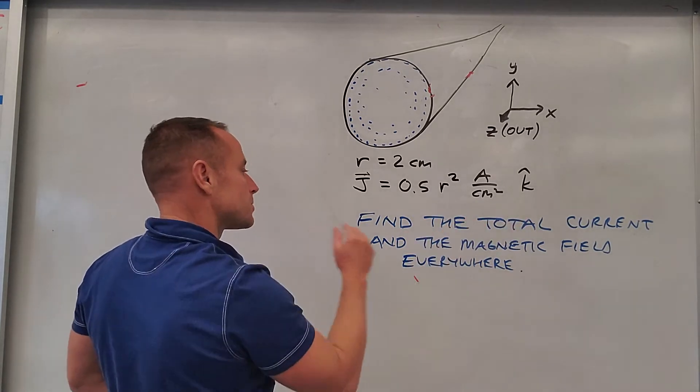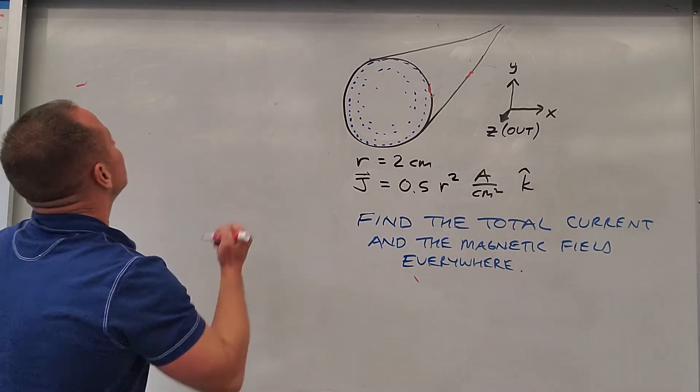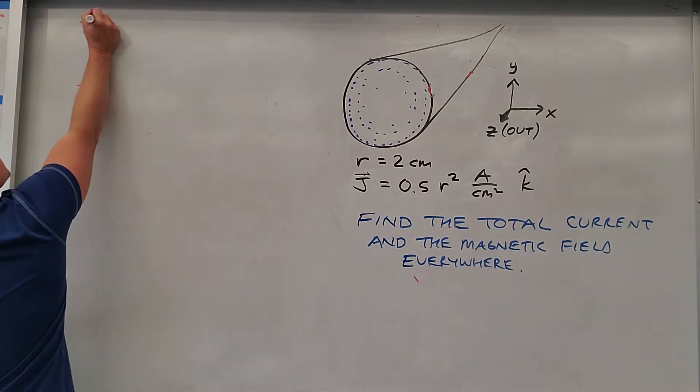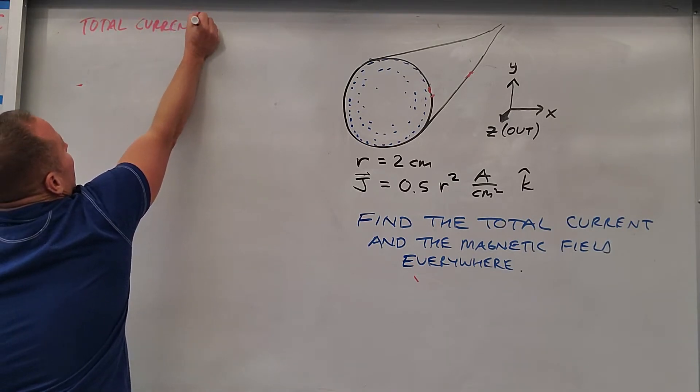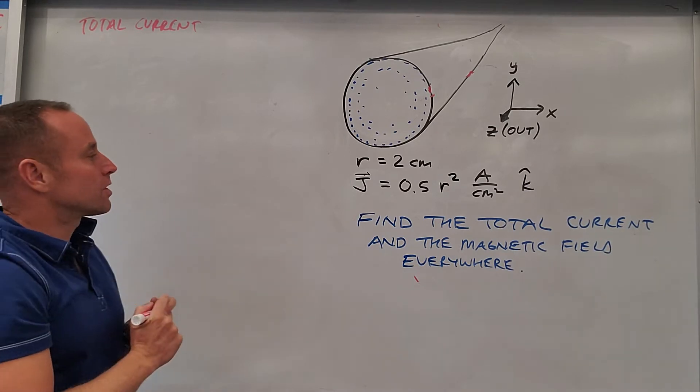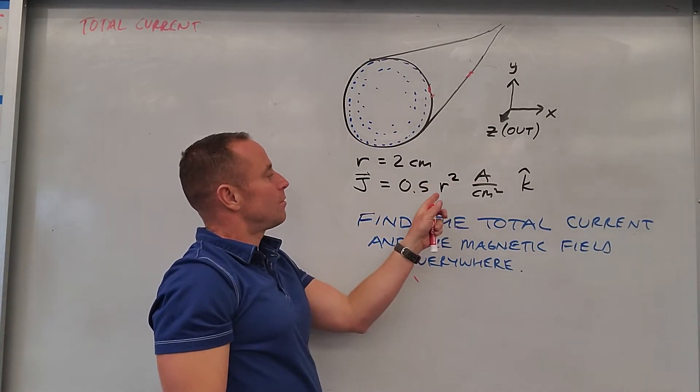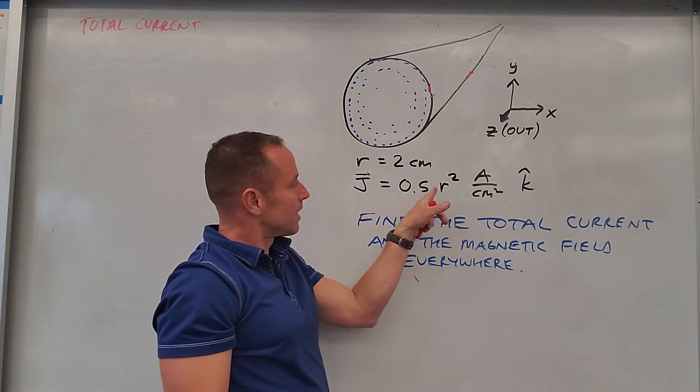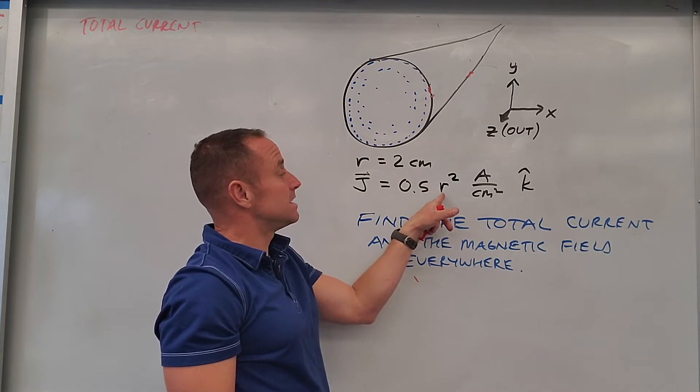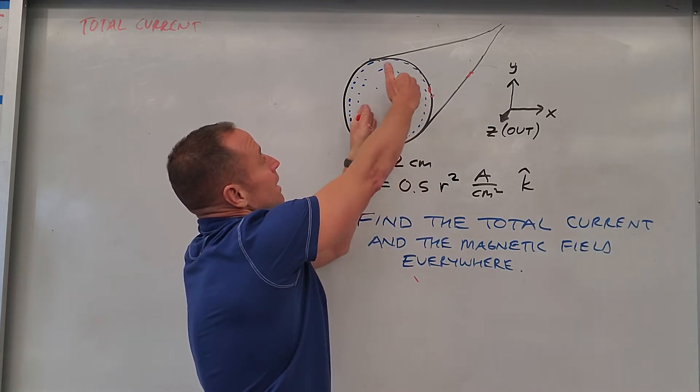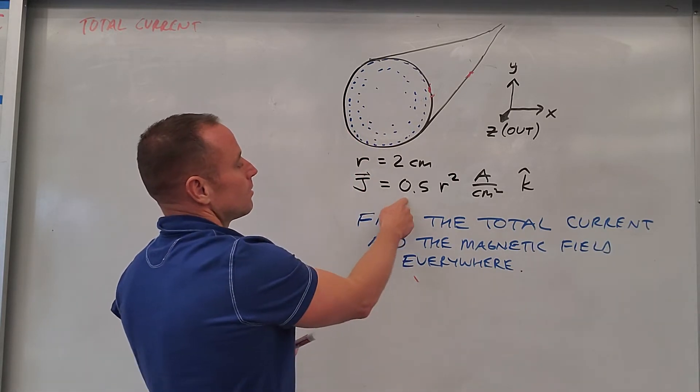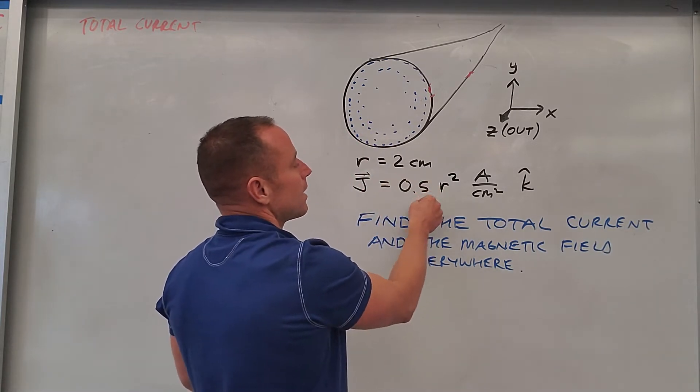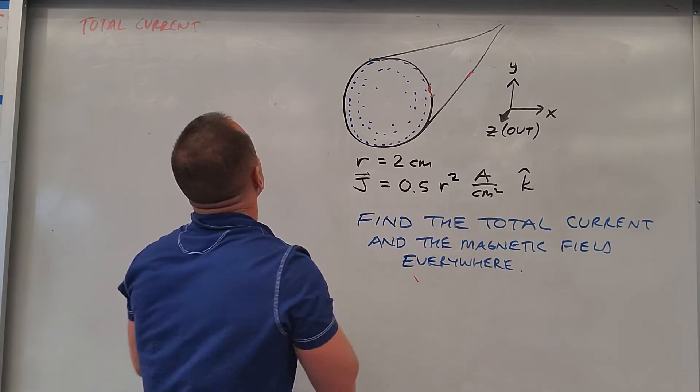So what we want to do is find the total current and magnetic field everywhere. So let's work on the total current first. Well, we can't just use current per area times area now because the current density is changing as you move out, right?